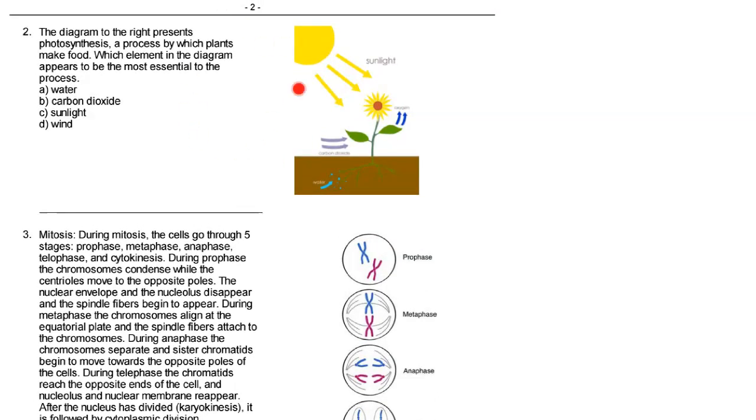Okay, so here we go, number two. Now, number two I want to point out a couple of things. The first thing I want to point out is the skill of evaluation. Let me read this question first and then we'll kind of jump into this skill. The diagram to the right presents photosynthesis, a process by which plants make food. Which element in the diagram appears to be the most essential to the process?